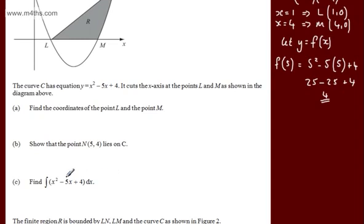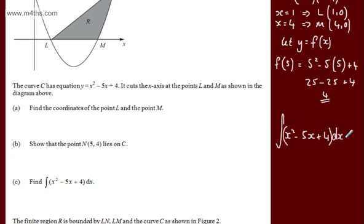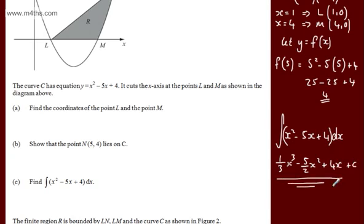In part C, we're asked to find the indefinite integral of x squared minus 5x plus 4 with respect to x. We raise by power and divide by the new power: we get one third x cubed, minus 5 over 2 x squared, plus 4x, plus a constant of integration. Remember your constant of integration.